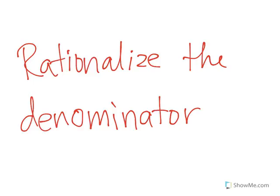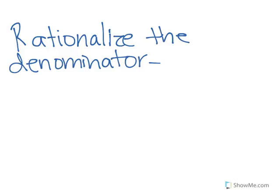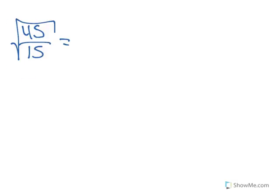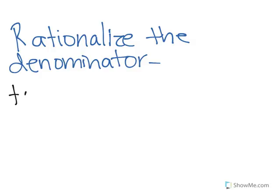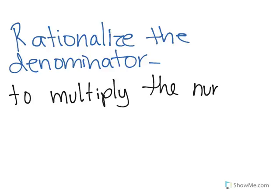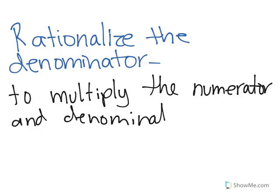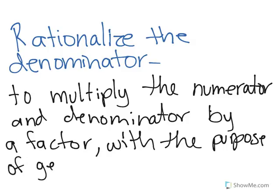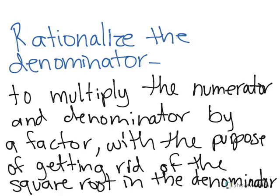Hello, today we will learn how to rationalize the denominator. To rationalize a denominator we must have a fraction such as this one with a square root in the denominator. To rationalize means to basically get rid of that square root. In our definition, it means to multiply the numerator and denominator by a factor with the purpose of getting rid of the square root in the denominator.